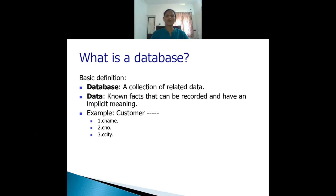What do you mean by data? Data means facts that can be recorded and have an implicit meaning — some fact about someone that we can store somewhere and that has a clear meaning. For example, customer details stored in a database: customer name, customer number, customer city — all these together form the data of a customer.